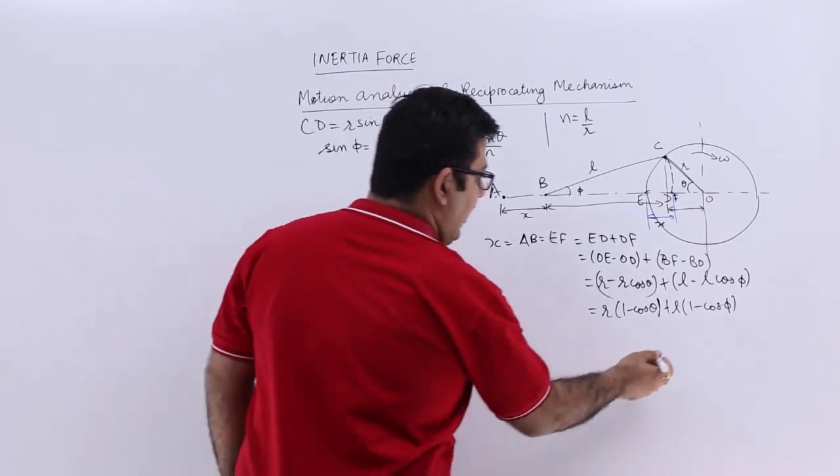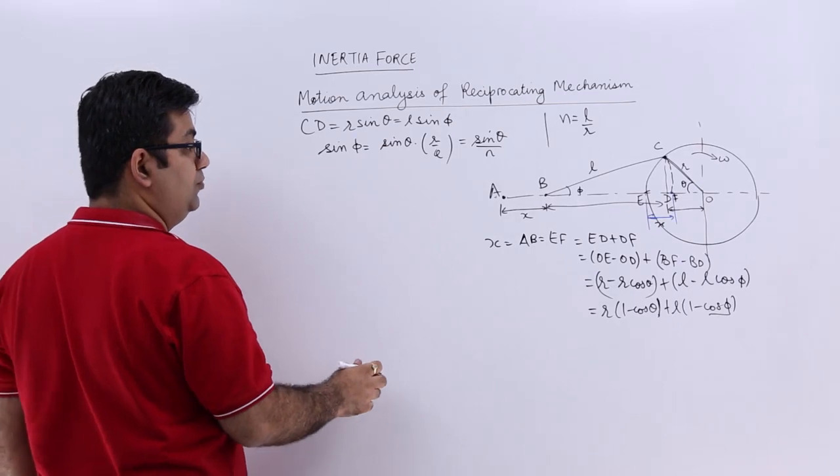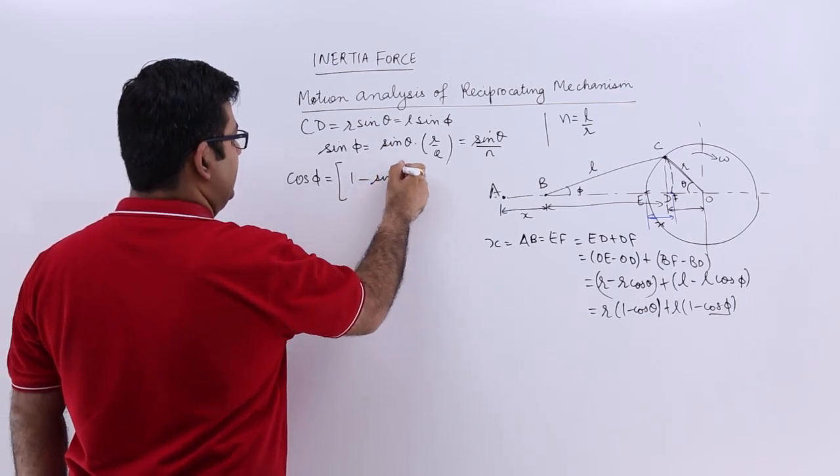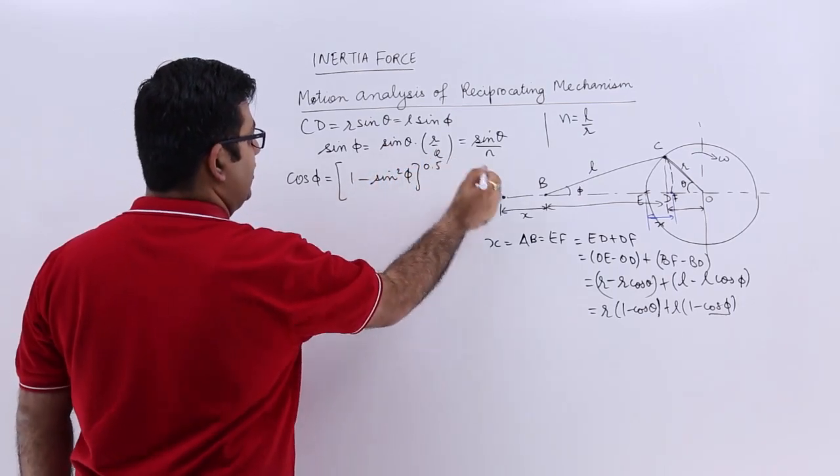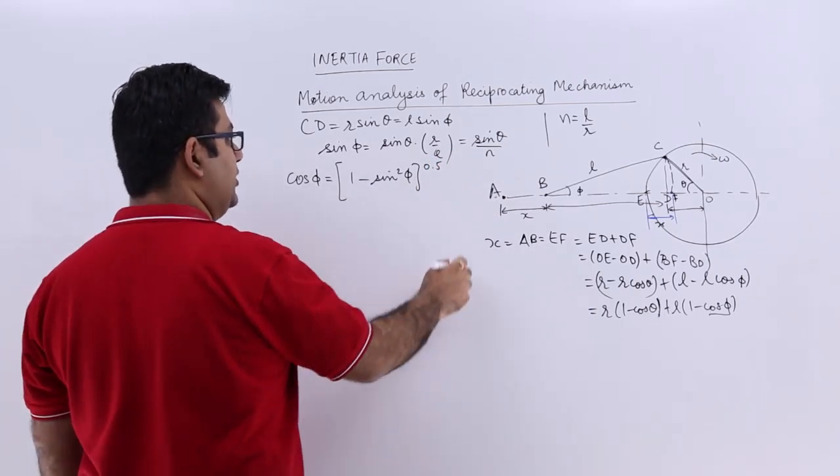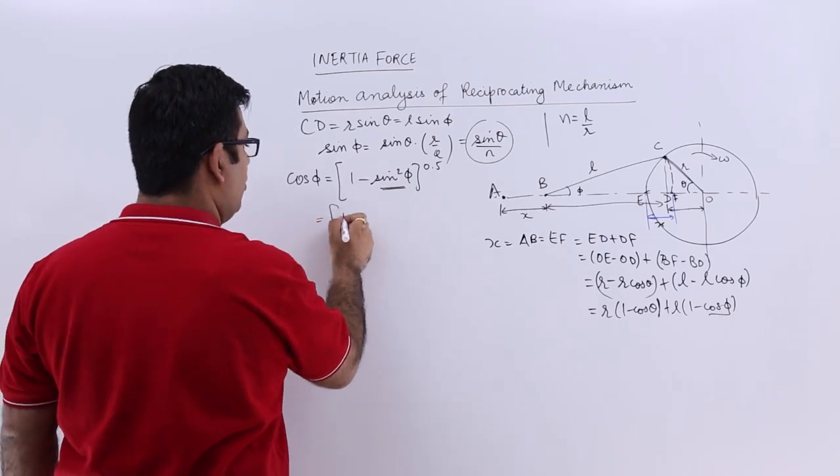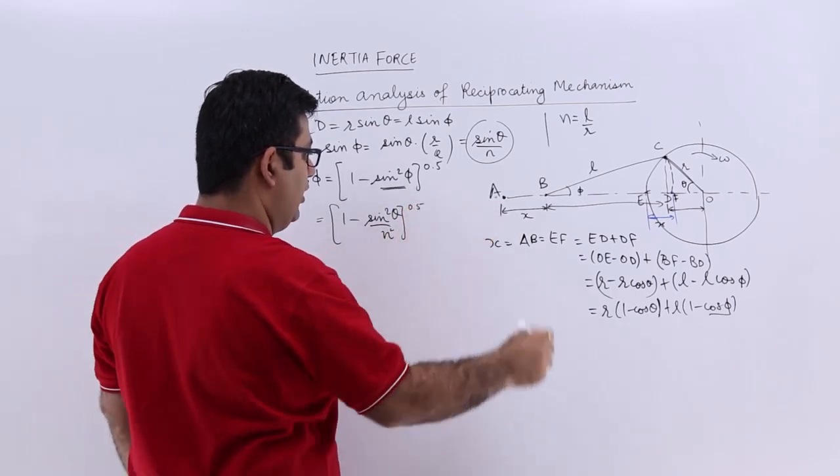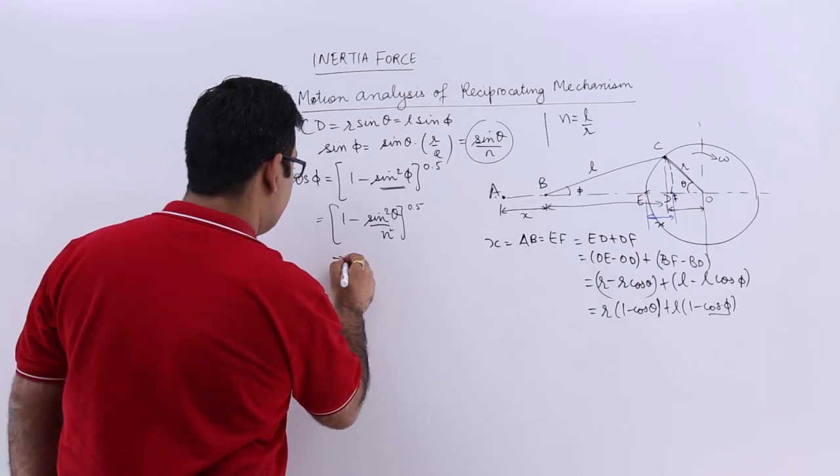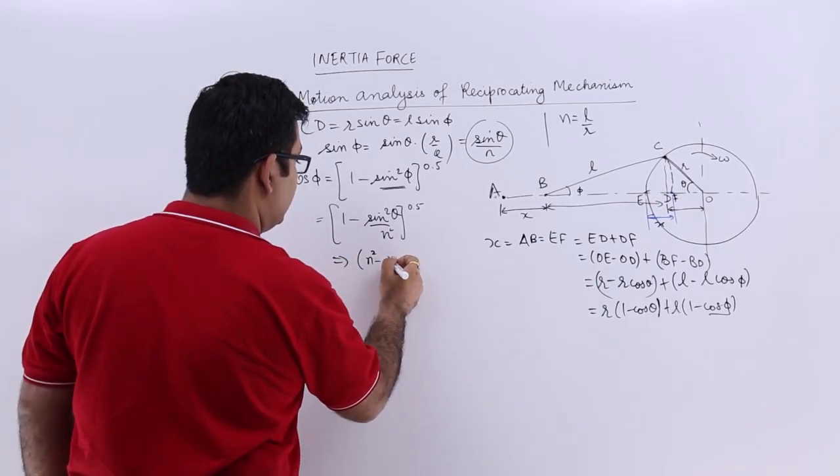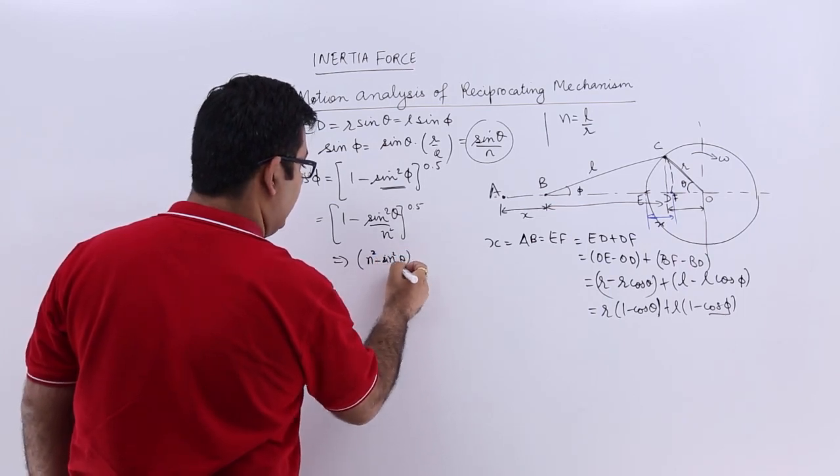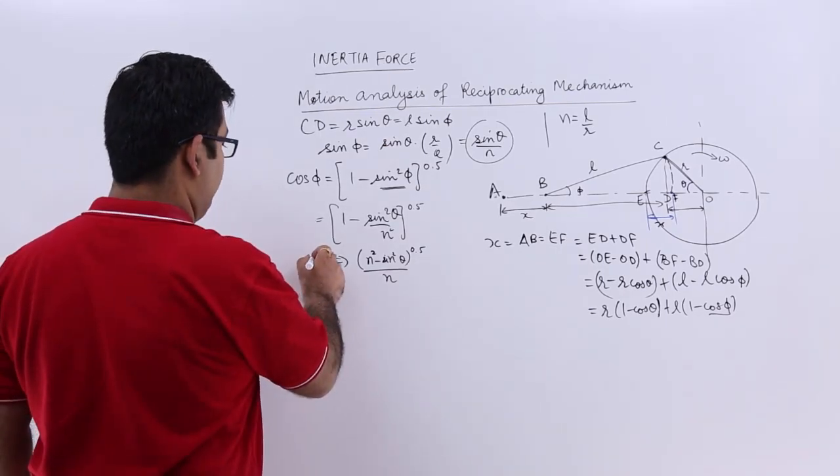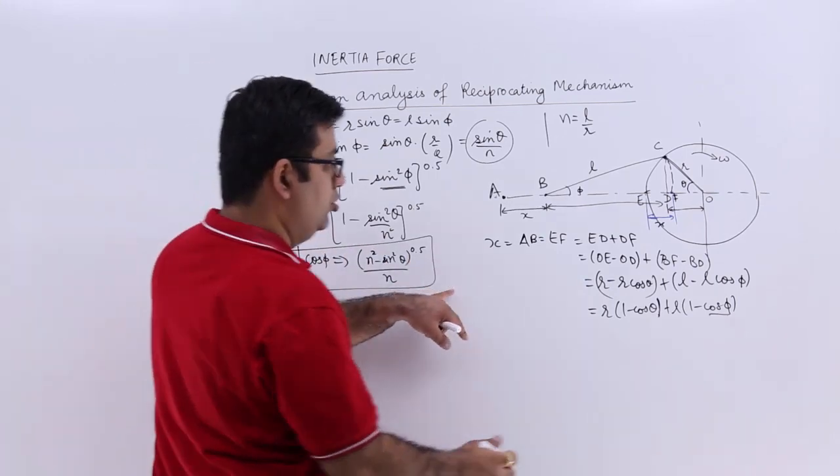So we have sin phi. I need to get a value for cos phi. So cos phi would be equal to square root of 1 minus sin square phi. I can substitute this value over here. So you will have square root of 1 minus sin square theta upon N square. This would give you square root of N square minus sin square theta upon N. This N is out of the square root sign. So this is your cos phi.